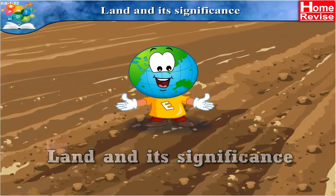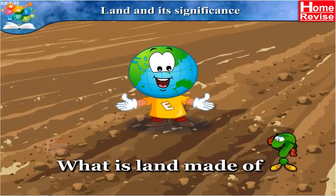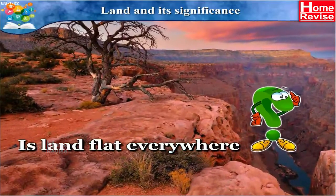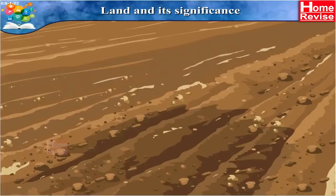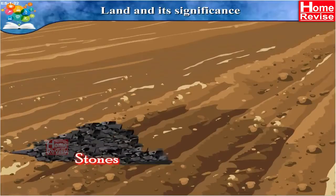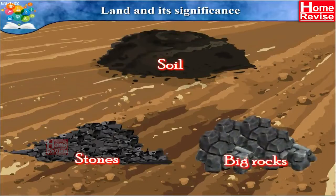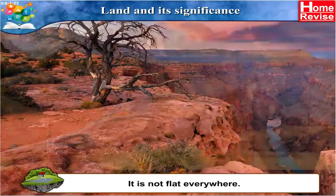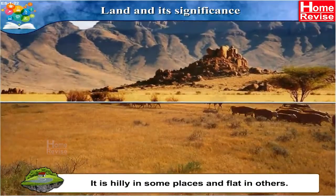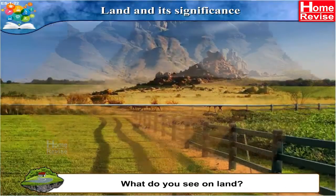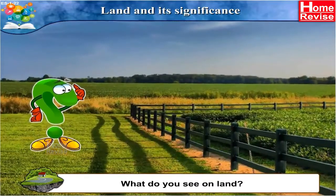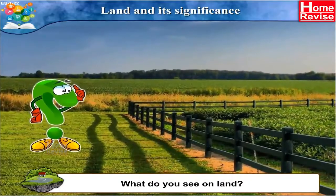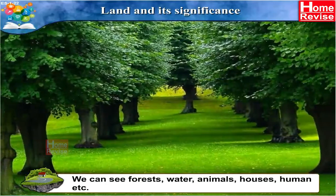Do you know what land is made of? Land is made of stones, soil and big rocks, and it is not flat everywhere — it is hilly in some places and flat in others. On land we can see forests, water, animals, houses, humans, etc.